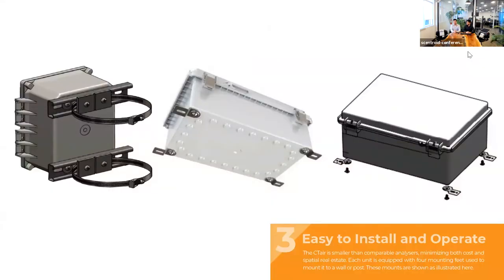Let's briefly go over the different mounting options. The most common is pole mounting — using metal ties to wrap and secure it around a pole. Another option is wall mounting, used by feet brackets that mount it directly to a wall. Depending on your environment, if there's no pole or wall available, you can also put this on a tripod, because it's very light and easily mountable on multiple platforms.